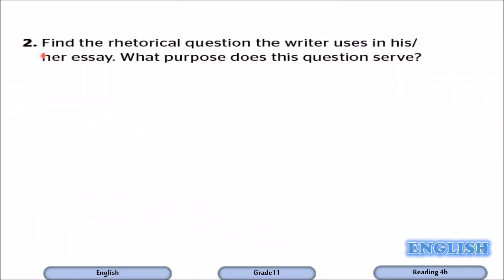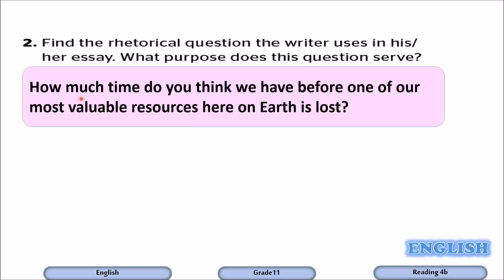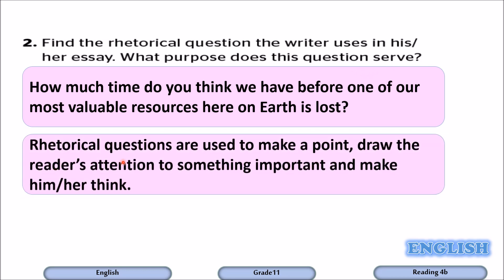Question number two: find the rhetorical question — a question that doesn't require an answer because the answer is implied. The rhetorical question in the essay is: 'How much time do we think we have before one of our most valuable resources here on earth is lost?' Rhetorical questions are used to make a point, draw the reader's attention to something important, and make him or her think.